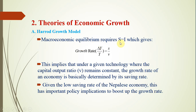Macroeconomic equilibrium requires savings to equal investment. By substituting S times Y for savings and V times change in Y for investment and solving, we get the growth rate equation: the growth rate of output is given by S divided by V. Under given technology, V remains constant, and this equation tells us that S is the determinant of output growth — the higher the saving rate, the higher the growth rate of the economy.